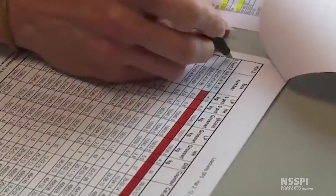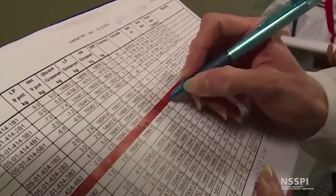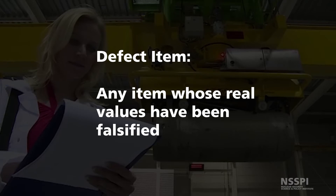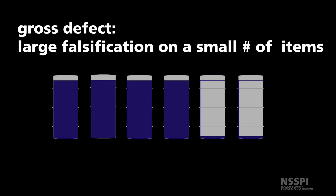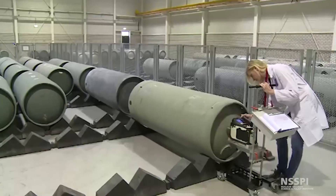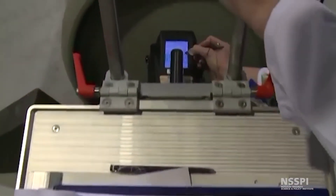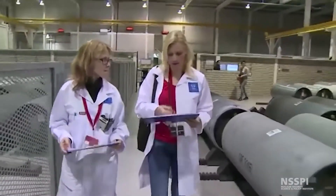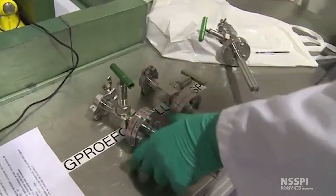Inspectors will also analyze book inventory records in order to verify that there has not been an artificial reduction in reported MUF values. The analysis is performed to detect what we call defect items. A defect item is any item for which the reported values have been falsified. A gross defect in reporting involves a large falsification on a small number of items. A bias defect involves small falsifications over a large number of items. In addition, the inspector shall verify any inaccurate reporting of values for material purity and/or enrichment.